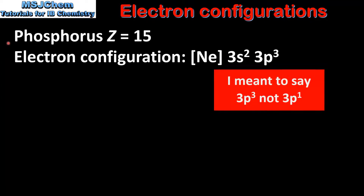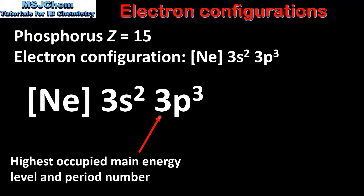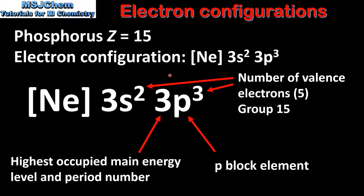The next example is phosphorus, atomic number 15, electron configuration [Ne] 3s2 3p3. The 3 is the highest occupied main energy level and the period number, so phosphorus is in period 3. The 3p sublevel is being filled, so phosphorus is a P block element. The valence electrons are the 2 in the 3s sublevel and the 3 in the 3p sublevel, giving a total of 5 valence electrons, so phosphorus is in group 15.